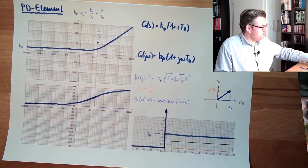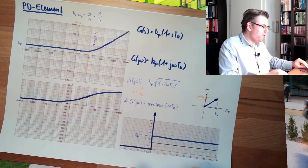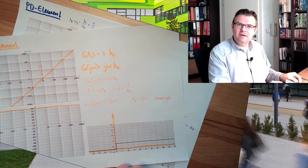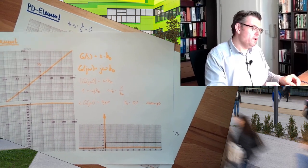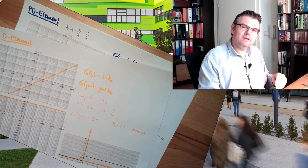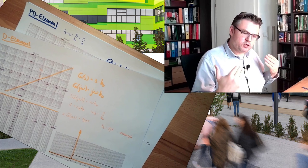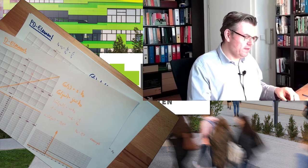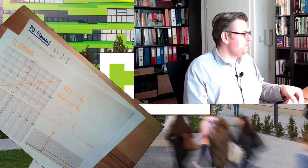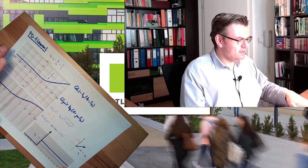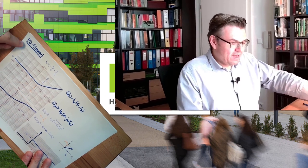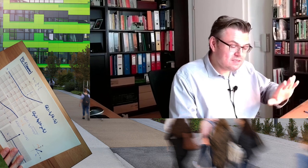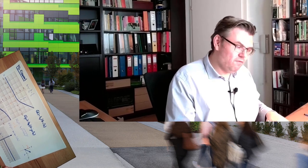We are going to infinity, and as we noted, this ideal D element is not really practical. We used a PT1 element to make the derivation element more realistic. In a later video, we will do exactly the same thing with the PD element — adding a PT1 element to it.